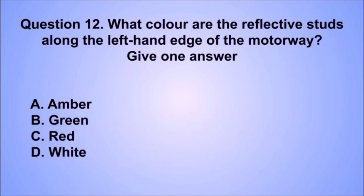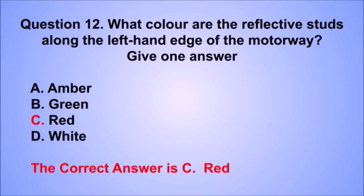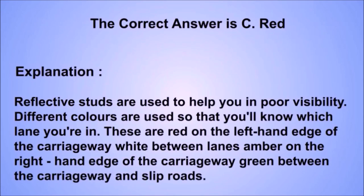Question 12. What color are the reflective studs along the left-hand edge of the motorway? The correct answer is C: Red. Reflective studs are used to help you in poor visibility. Different colors are used so that you'll know which lane you're in: red on the left-hand edge, white between lanes, amber on the right-hand edge, and green between the carriageway and slip roads.